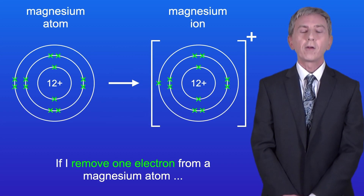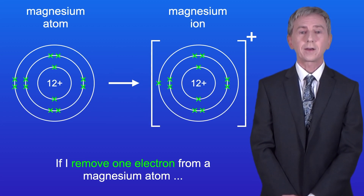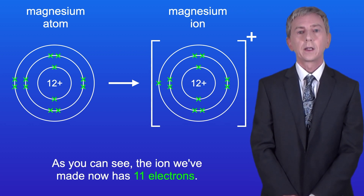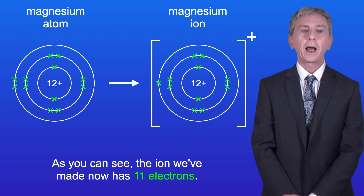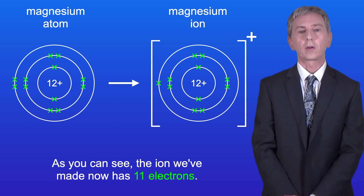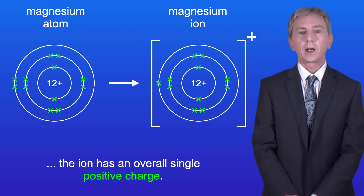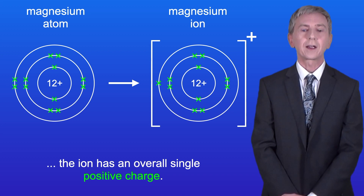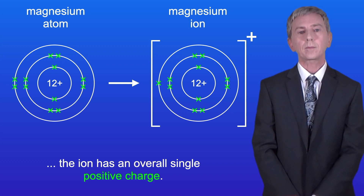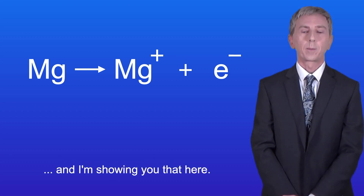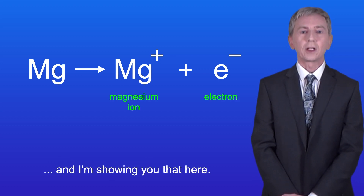Now if I remove one electron from a magnesium atom then I form a magnesium ion, as shown here. The ion we've made now has 11 electrons. Because we still have 12 protons in the nucleus, the ion has an overall single positive charge. We can represent this as an equation — the magnesium ion is represented as Mg+ and the electron as e-.